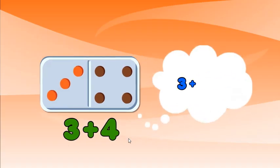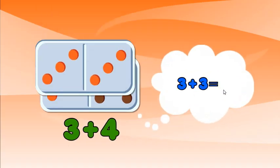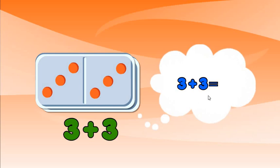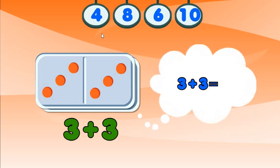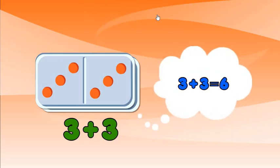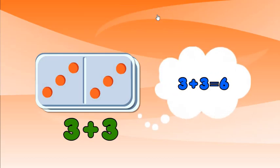Think double 3 plus 1. What is double 3? Double 3 is 6, so now add 1.